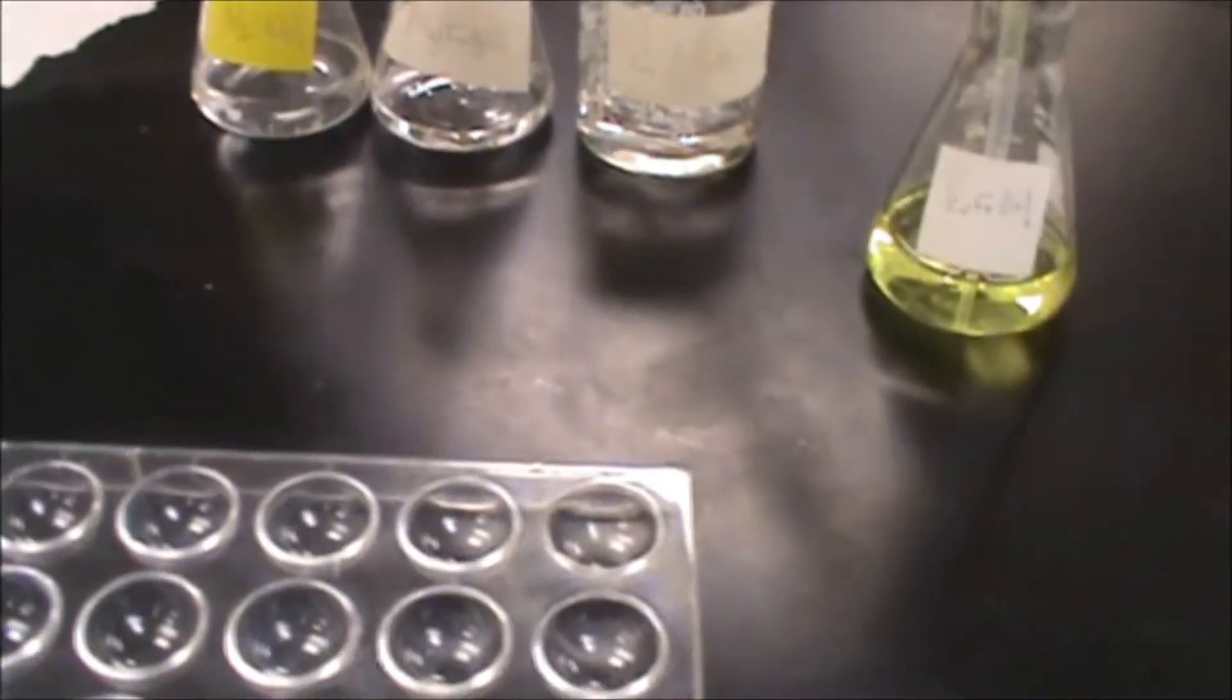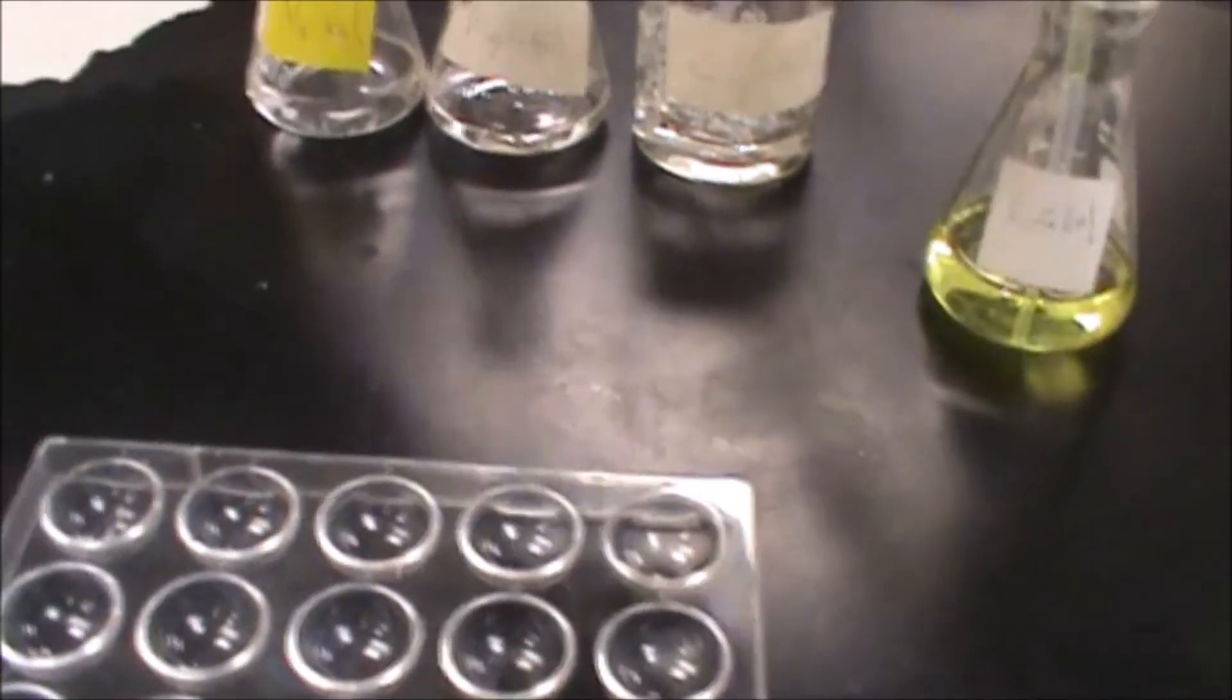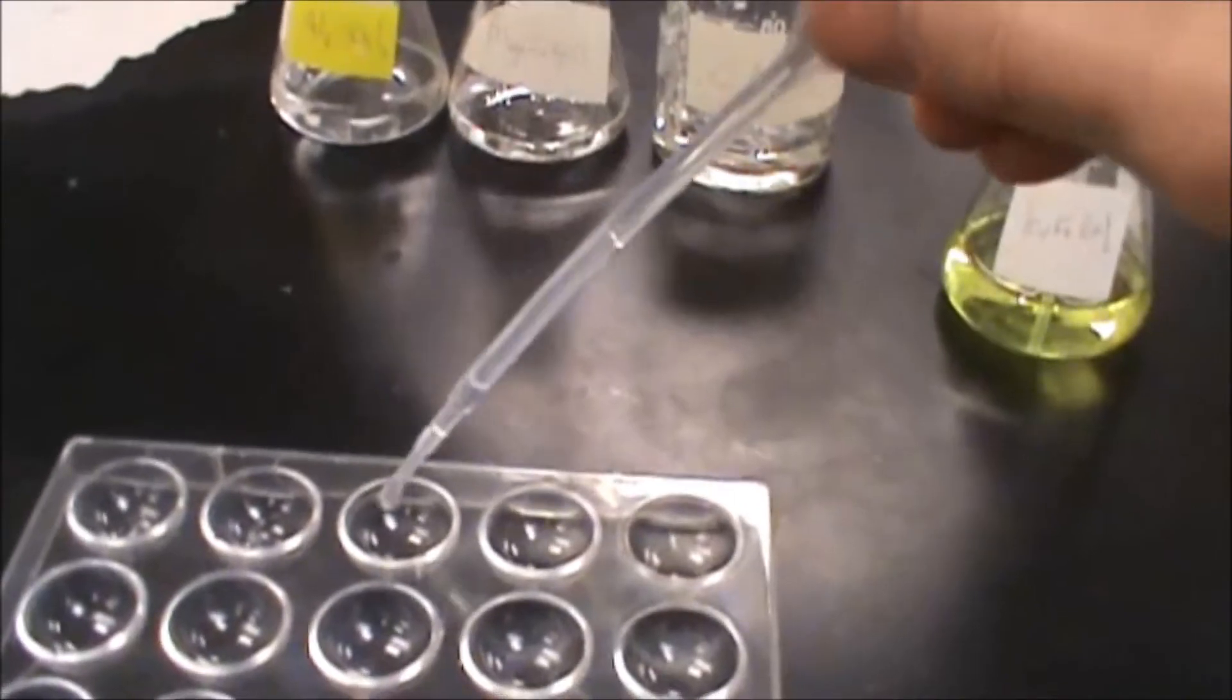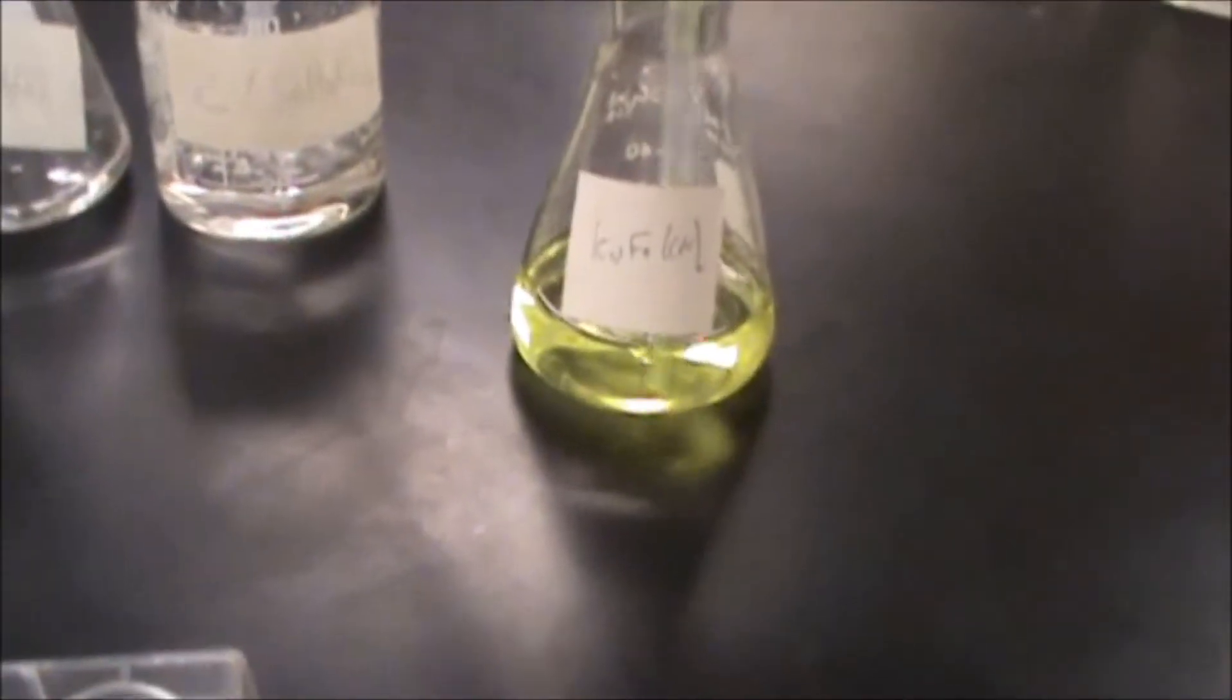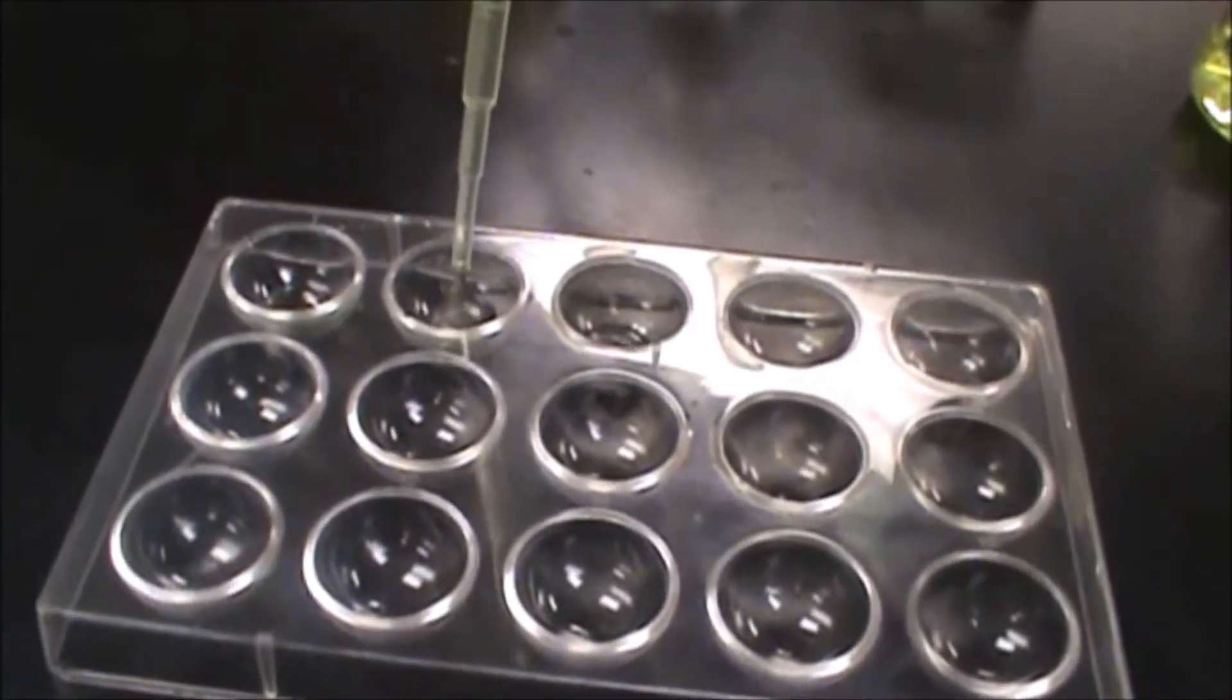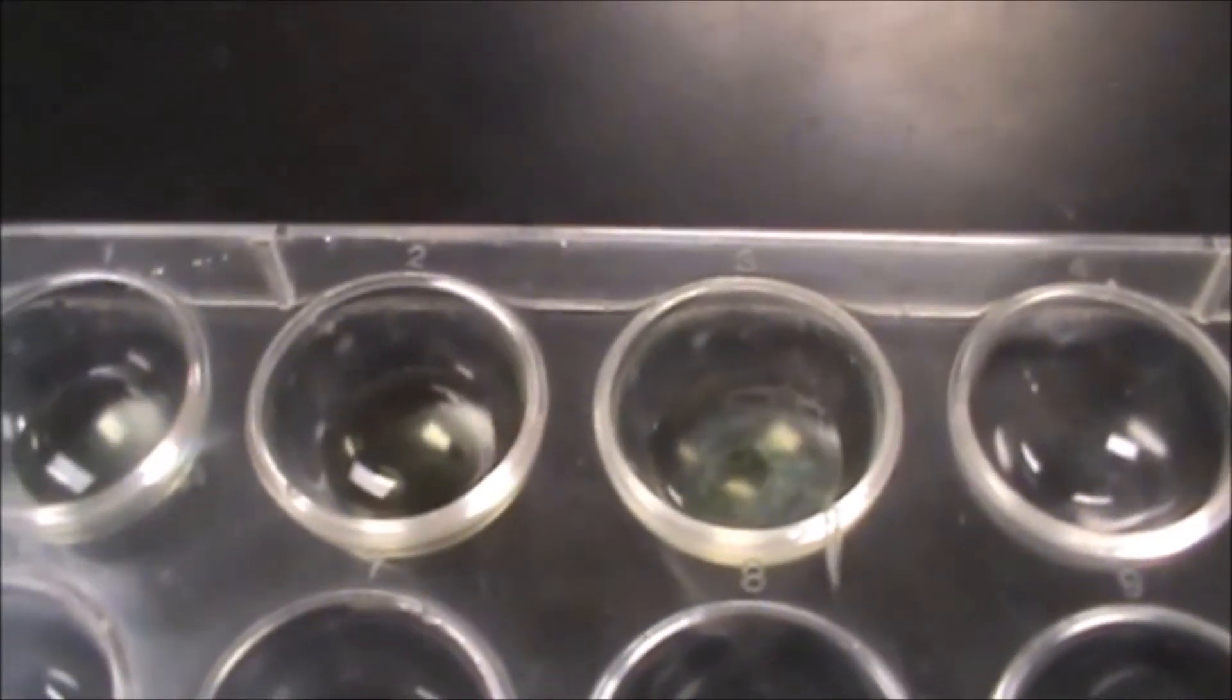So first we are going to take a drop of Aluminum, drop of Magnesium, and drop of Zinc, put it into here. Then we are going to add some potassium ferrocyanide to it, and what is going to happen there is that one of these is going to precipitate, the other two are not.